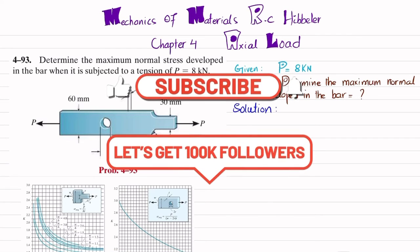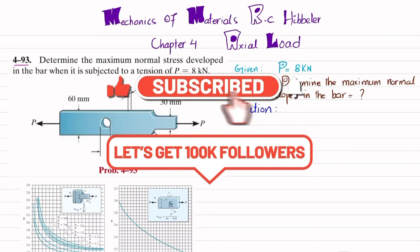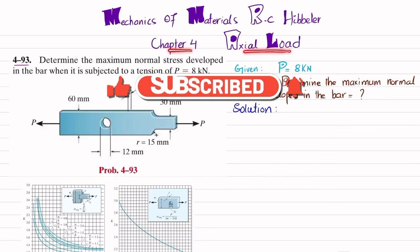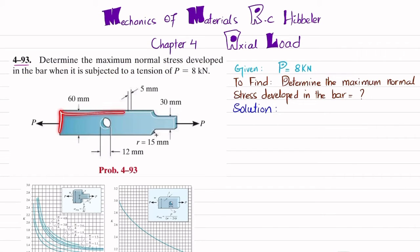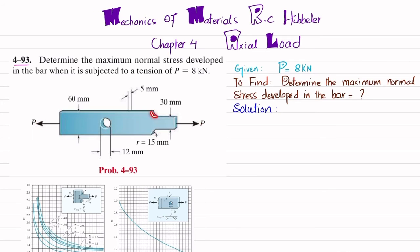Welcome back. In this video we are going to solve problem 4-93, taken from chapter 4 on axial load from the book Mechanics of Materials by R.C. Hibbeler. The problem statement is: determine the maximum normal stress developed in the bar when it is subjected to a tension of 8 kilonewtons. This bar has both a hole and a fillet, which cause stress concentrations.